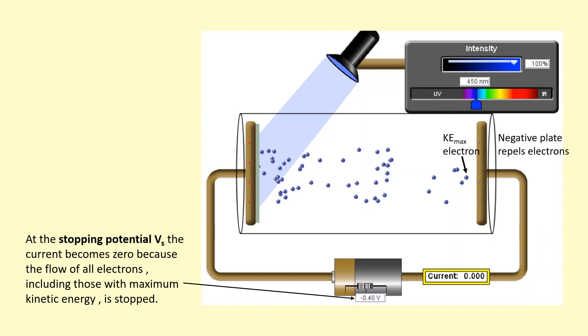Stopping potential can be used to calculate the maximum kinetic energy. So we know potential difference is work done per unit charge. Just rearrange this equation. We get this. And instead of the V there, we're going to use the stopping potential. And instead of energy, we're going to have the maximum kinetic energy there. And the charge here is going to be the charge of an electron.